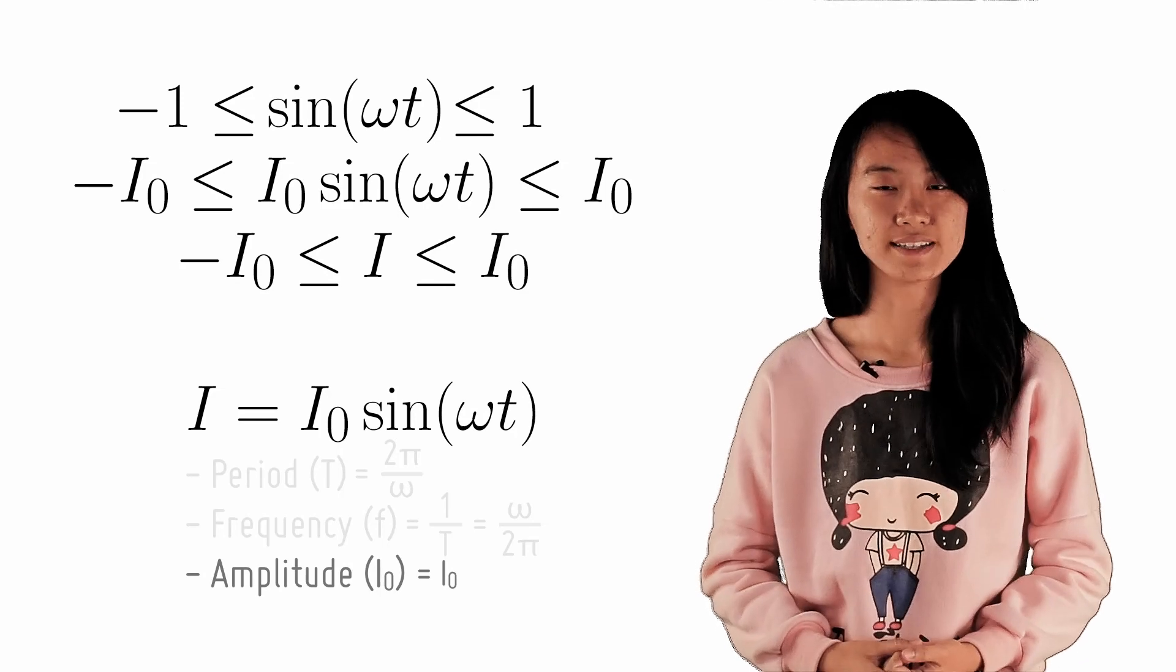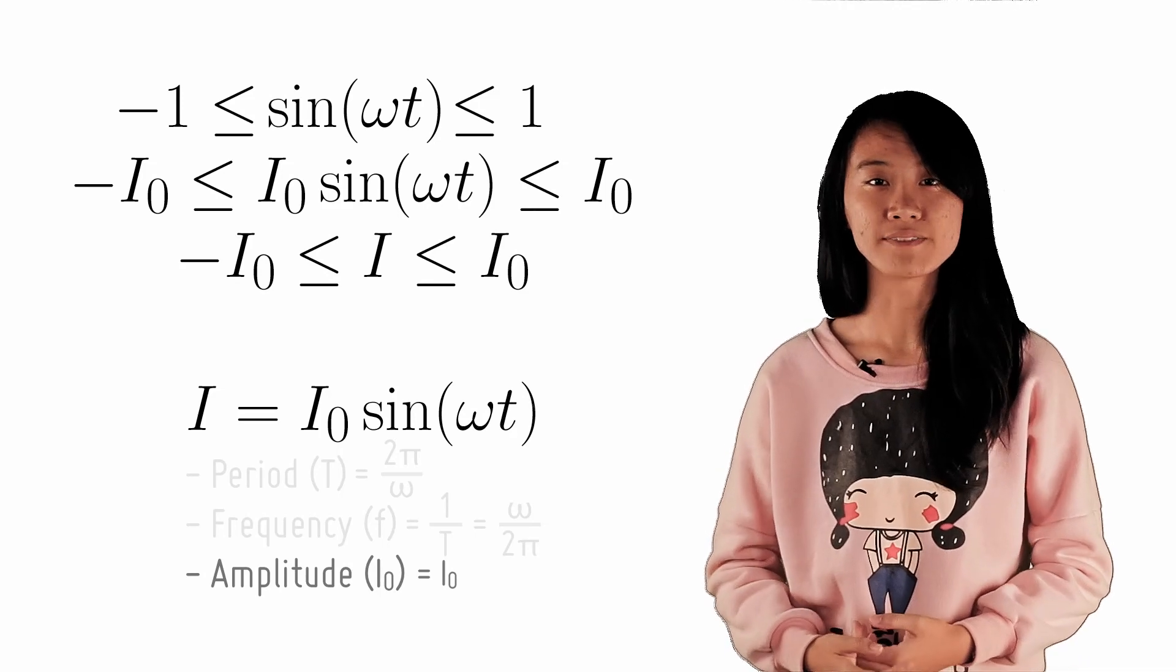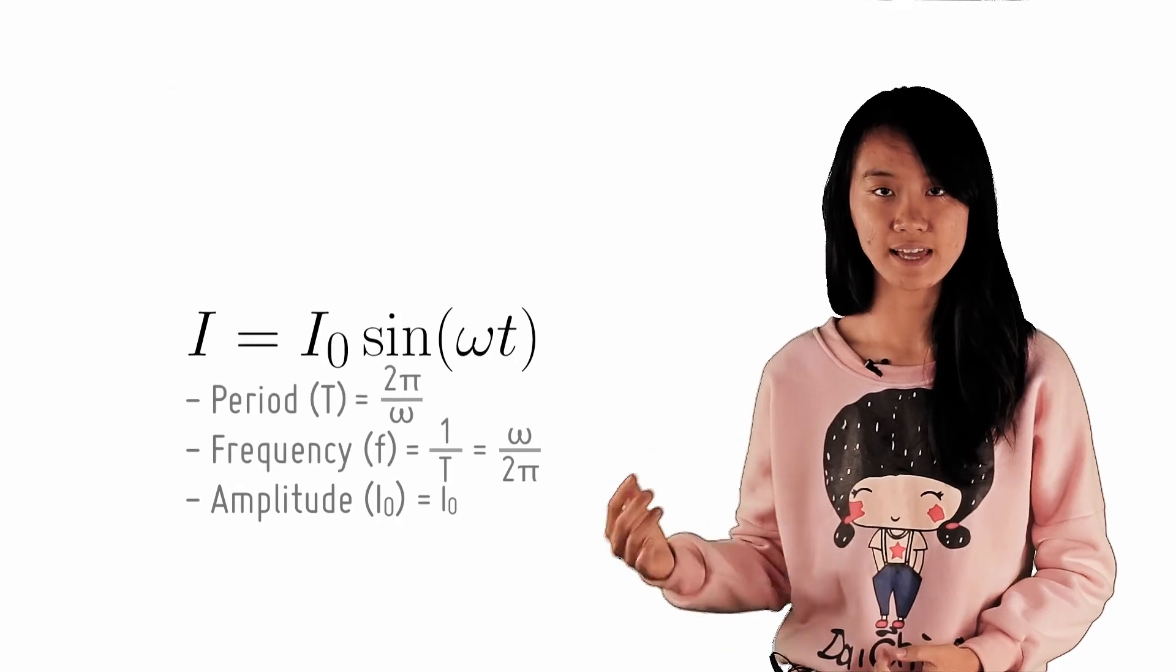Hence, from the equation of the current in an AC, we are able to derive its key characteristics from the parameters ω and I₀.